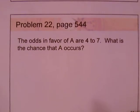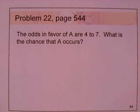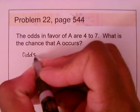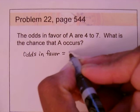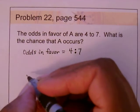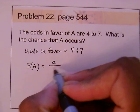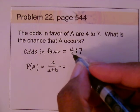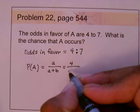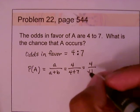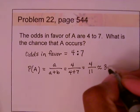Take a look at problem 22 on page 544. The odds in favor of A are 4 to 7. The probability of A occurring equals A divided by A plus B: 4 divided by 4 plus 7 equals 4 divided by 11, which is approximately 36%.